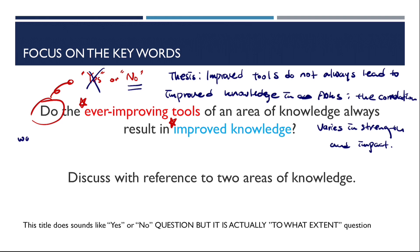And also it says that discuss with the reference to two areas of knowledge. So you have choice to choose which AOKs that you want to choose. So when you're developing the aim for this essay, there are four ways to develop your aims for this essay. The first way is no correlation. So you think that there are no correlation between these ever-improving tools and improved knowledge. The second way of answering this question is there are some correlation.